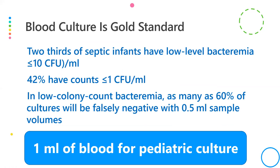In two-thirds of babies, low-level bacteremia is very common — the colony count can be as low as 10 colony-forming units per ml or below, and up to 40% may have just 1 CFU/ml. To detect this low-level bacteremia, the minimum blood volume sent in a culture bottle should be at least 1 ml.